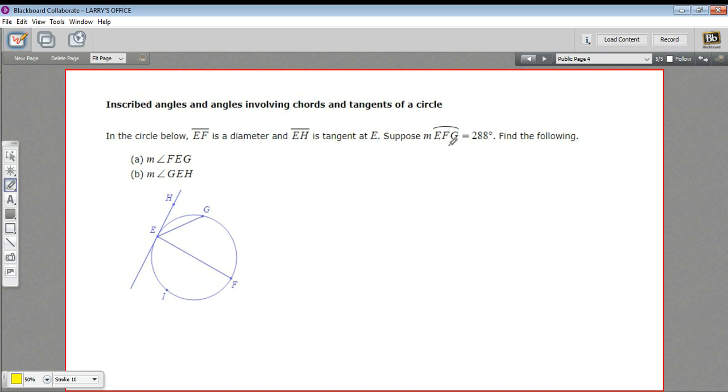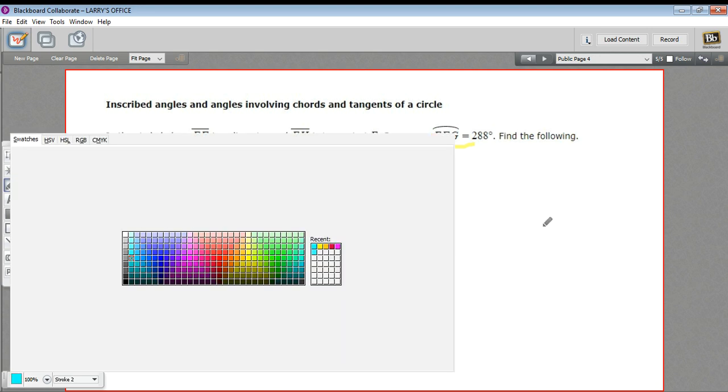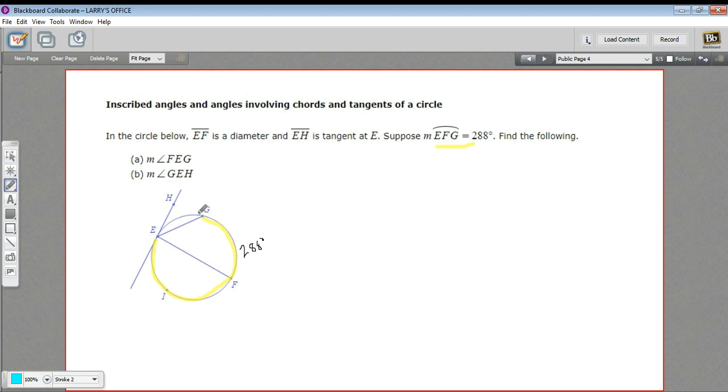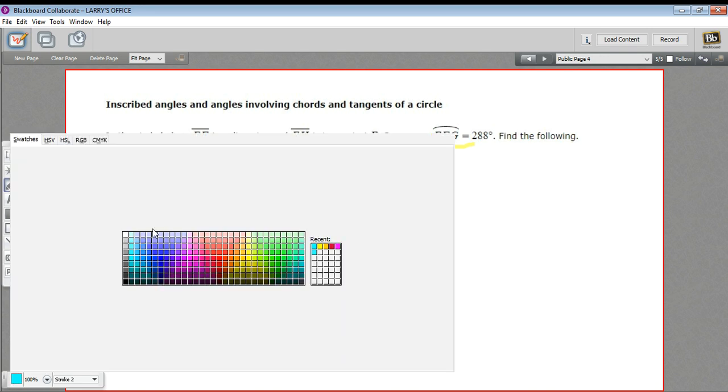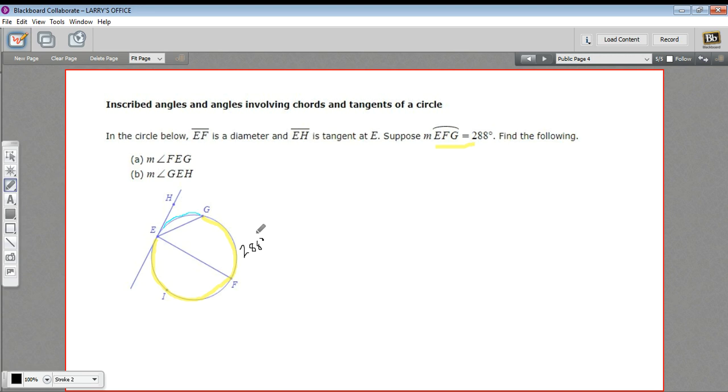This first piece of information we're given is that arc EFG, so from E through F all the way to G, is 288 degrees of this circle. That means this little piece left over is 360 minus 288. I'm just going to mark that in a different color. And that is 72, so this is 72 degrees of arc right here.